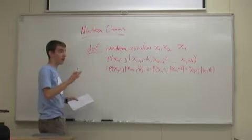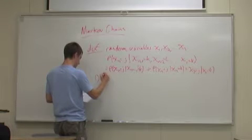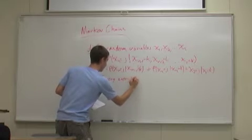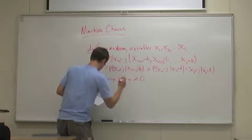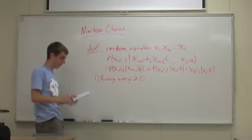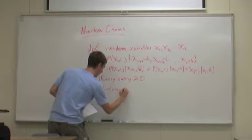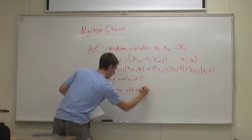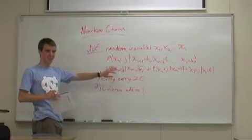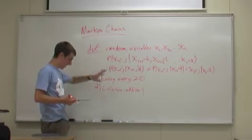There are a couple of really important properties of Markov chains. The first is that every entry in a Markov chain is going to be greater than or equal to zero — it's a probability matrix, so it doesn't make sense to have a negative probability. The second important thing is all the columns add to one. There are some edge cases where they don't, but for now we'll say they add to one.